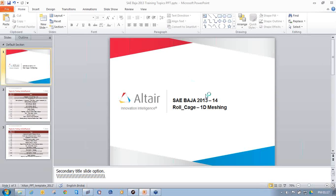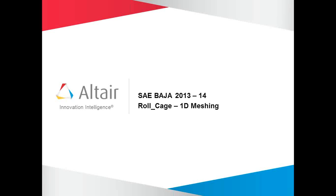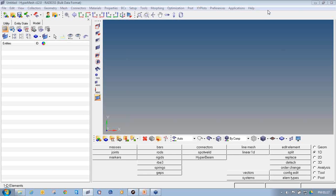Welcome to Altair Engineering training and support. The topic I'm going to cover in this video is roll cage — specifically how to create 1D meshing for a roll cage structure. Let's start our session and open HyperMesh.